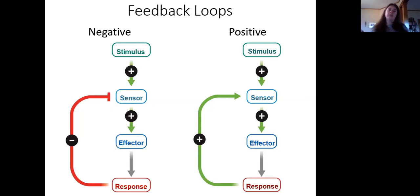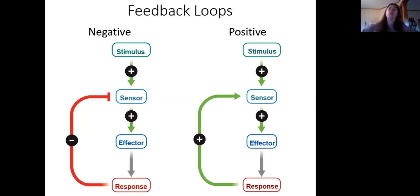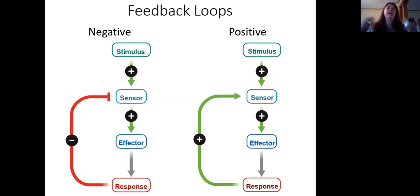In contrast, in a positive feedback loop, you have some sort of stimulus, that stimulus triggers a sensor, which triggers the effector, which causes a response that actually increases the direction of the stimulus. So it basically ramps up that response, and it becomes much stronger and more pronounced. Instead of returning to the previous condition, it actually amplifies whatever thing is happening.